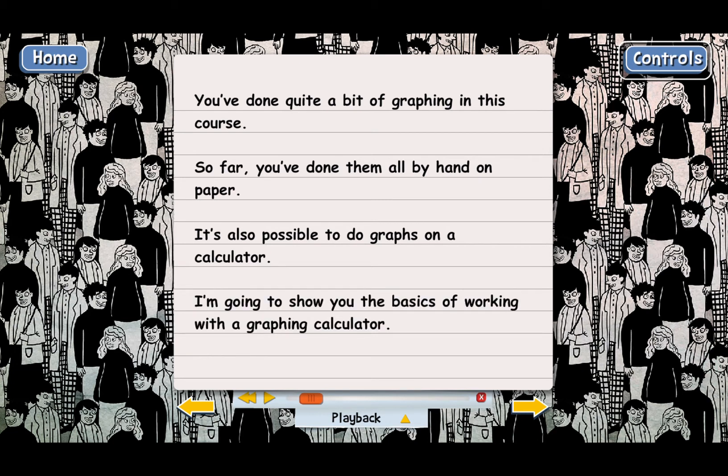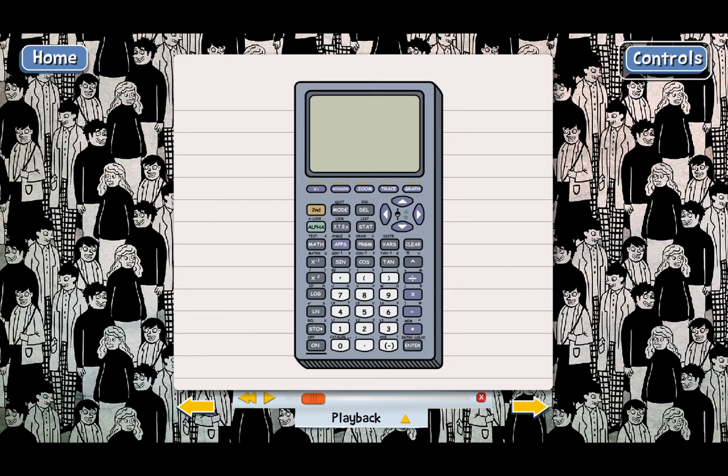There are a lot of different kinds of graphing calculators, but here's a pretty typical one. Let me show you. This has a lot of the same keys that you would find on any calculator—numbers and operation keys like addition, subtraction, multiplication, and division. But then it also has keys that you use for graphing. Most of these are on the very top row, right here.